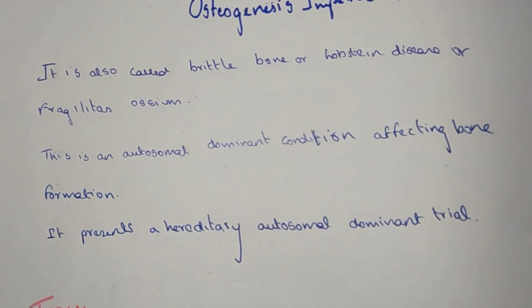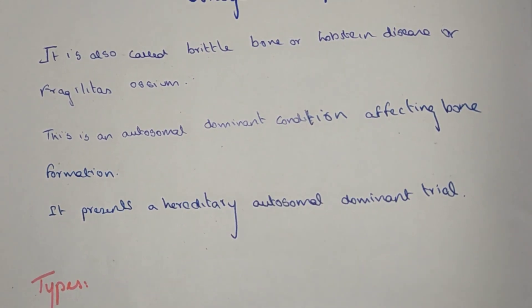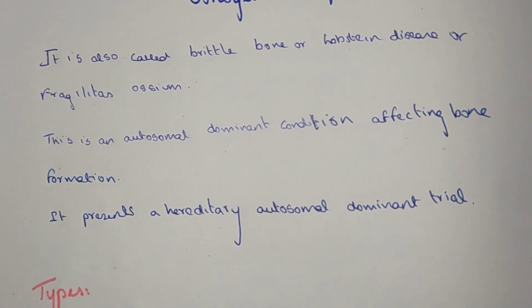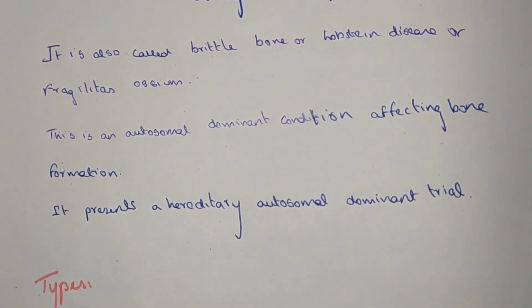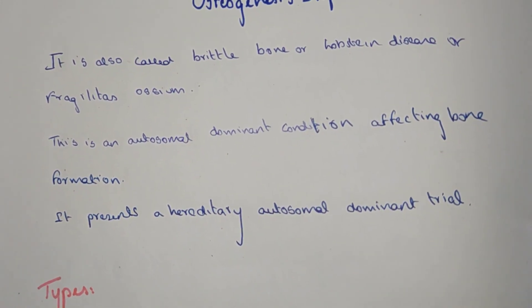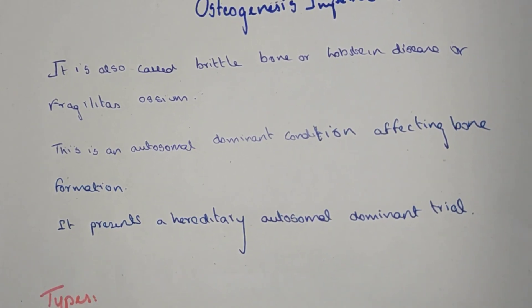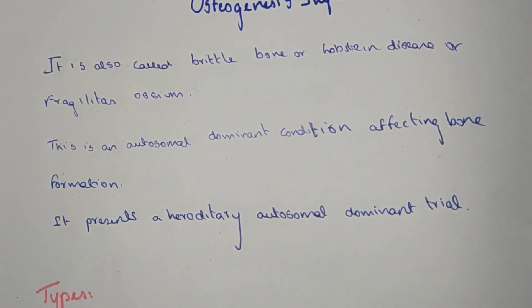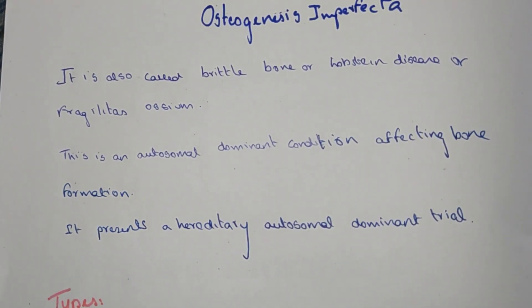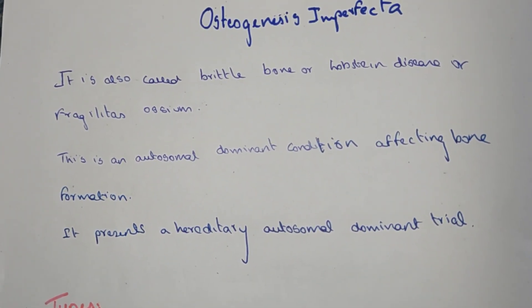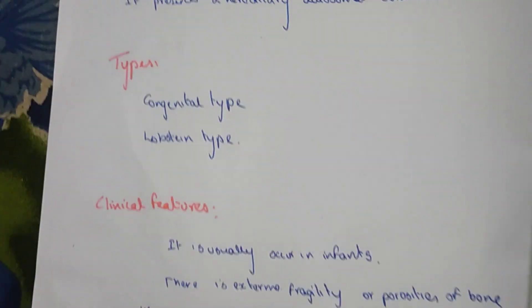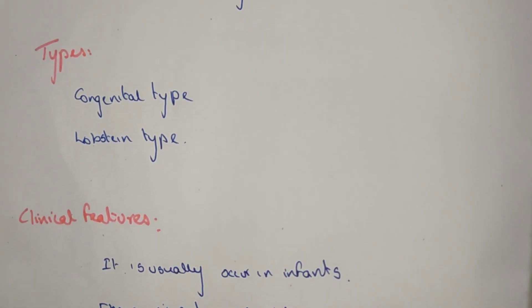It is a hereditary autosomal dominant condition. It is a genetic disease that affects bone formation. Osteo means bone, genesis means formation, and imperfecta means imperfect. The types are congenital type and lobster type.